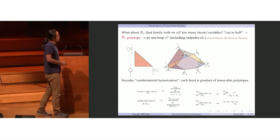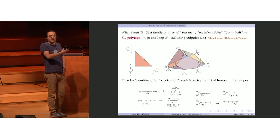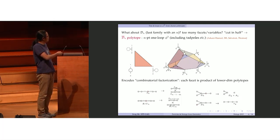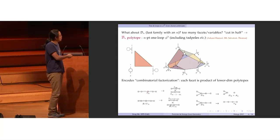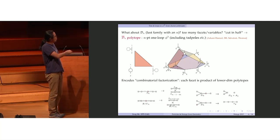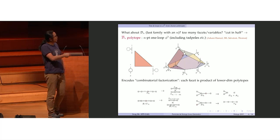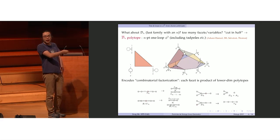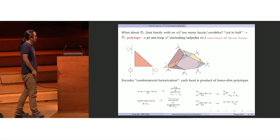The reason these polytopes encode Feynman diagrams is that they also encode combinatorial factorization, meaning their boundaries factorize into smaller polytopes of the same kind. This is most easily seen from the Dynkin diagrams. For type A, if you remove a node it becomes a product of two type A's — this means tree factorization for the associahedron. For the cyclohedron, going to its facet gives A times B, which is what we expect for tadpole diagrams. For type D, there are two kinds of facets: one factorization into D times A (one-loop times tree), and the other is an associahedron, like cutting the loop open into a tree.